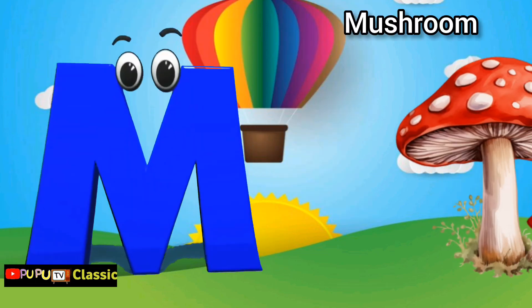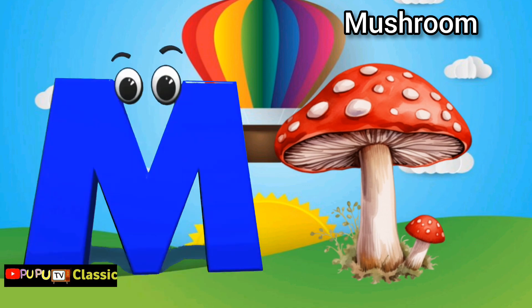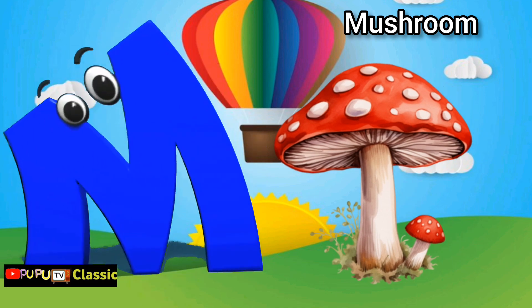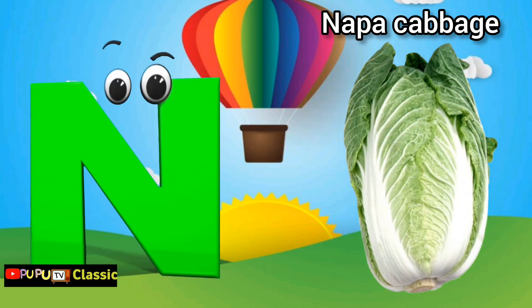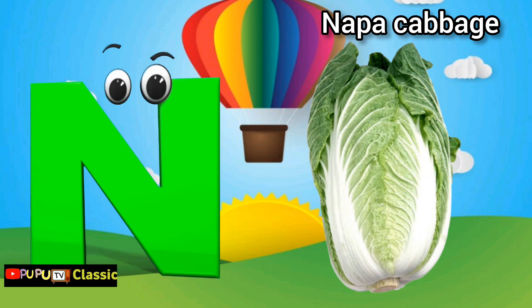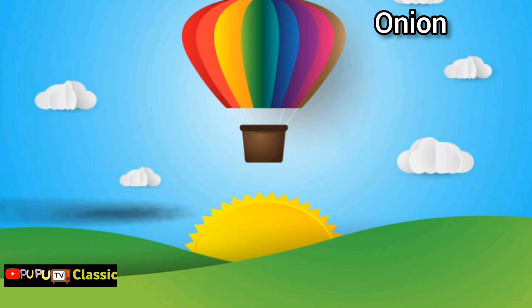M is for mushroom, mu mu mushroom. N is for napa cabbage, na na napa cabbage.